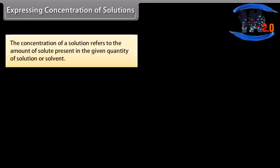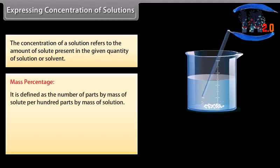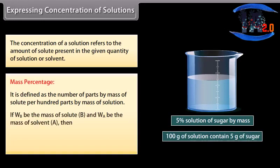Expressing concentration of solutions: The concentration of a solution refers to the amount of solute present in the given quantity of solution or solvent. Mass percentage is defined as the number of parts by mass of solute per hundred parts by mass of solution. If W_B is the mass of solute B and W_A is the mass of solvent A, then mass percentage of B is equal to W_B divided by (W_A plus W_B), multiplied by 100.